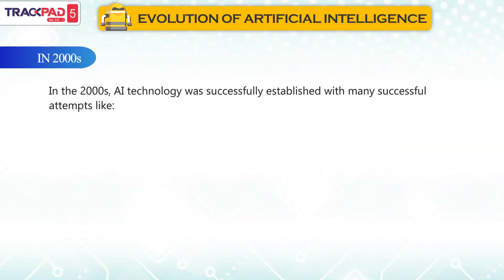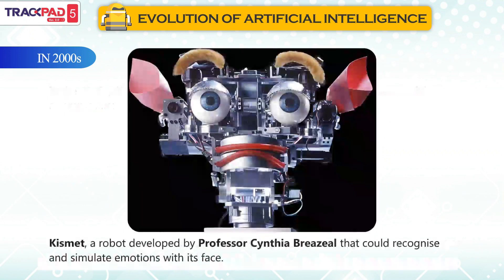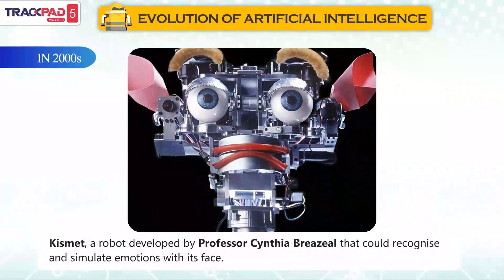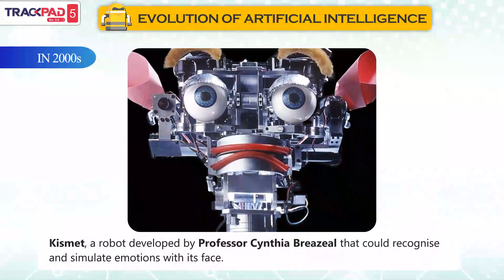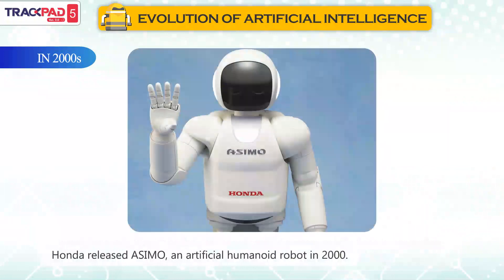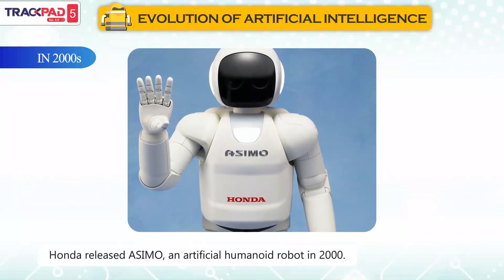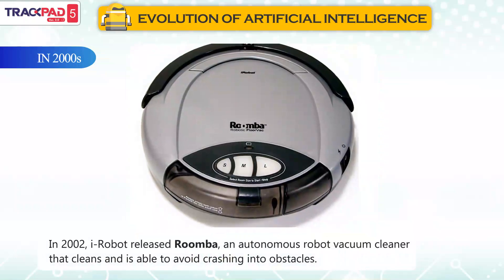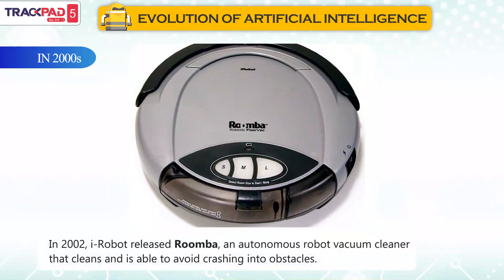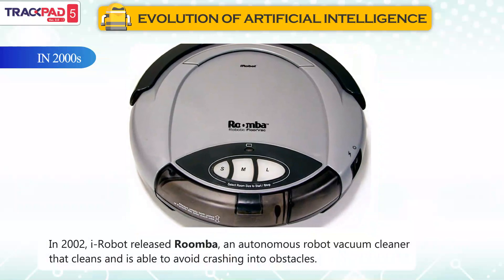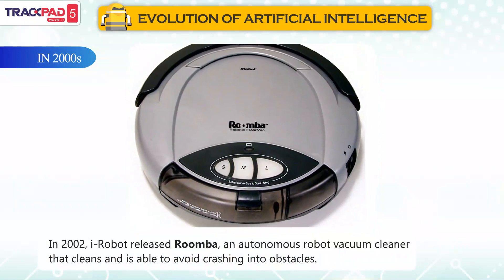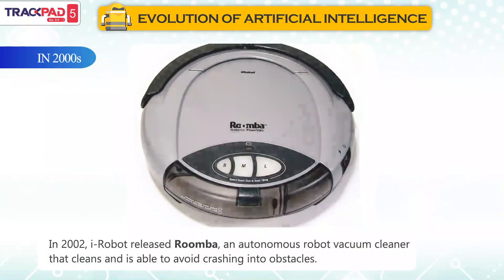In the 2000s, AI technology was successfully established with many successful attempts. Kismet was a robot developed by Professor Cynthia Breazeal that could recognize and simulate emotions with its face. Honda released Asimo, an artificial humanoid robot, in 2000. In 2002, iRobot released Roomba, an autonomous robot vacuum cleaner that cleans and is able to avoid crashing into obstacles.